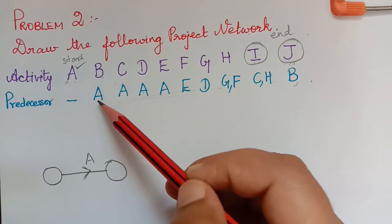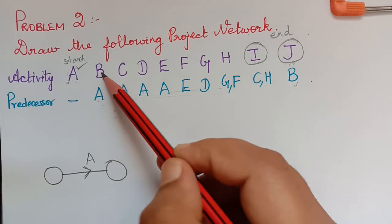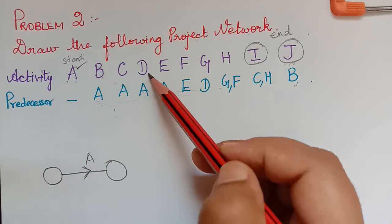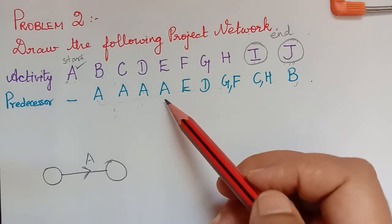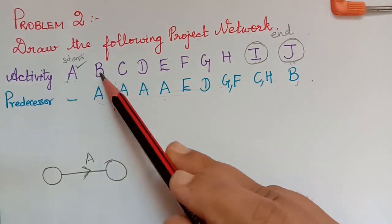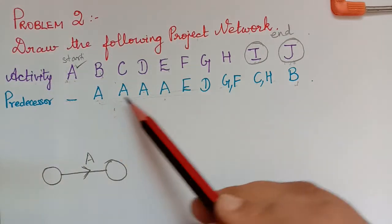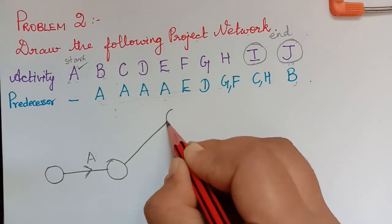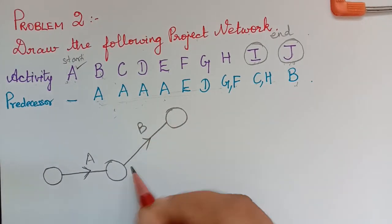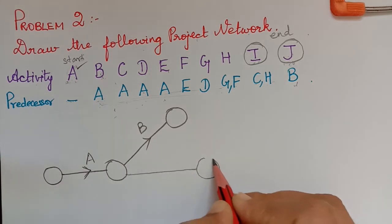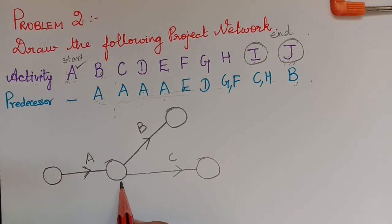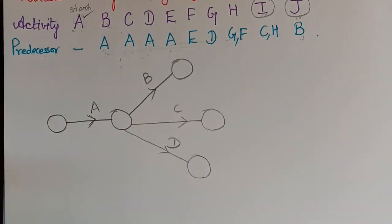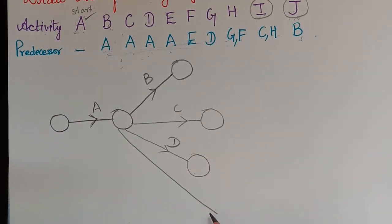Next we have activity B. Activity B is preceded by activity A. We can also see that C is preceded by A, D is preceded by A, and E is also preceded by A. So we can draw all activities B, C, D, and E simultaneously emanating from A. We draw activity B, then C, then D, and finally activity E.